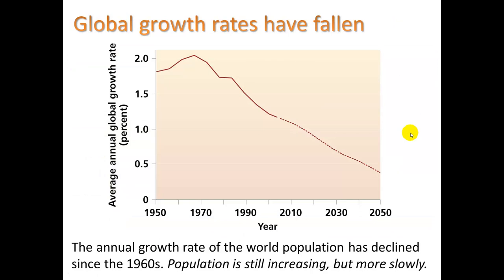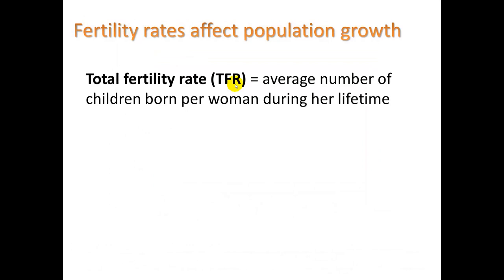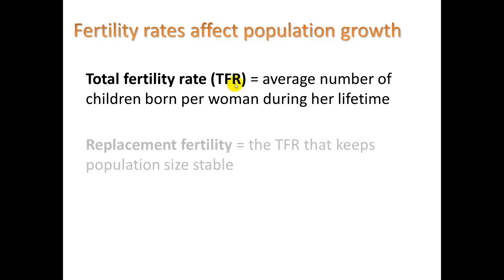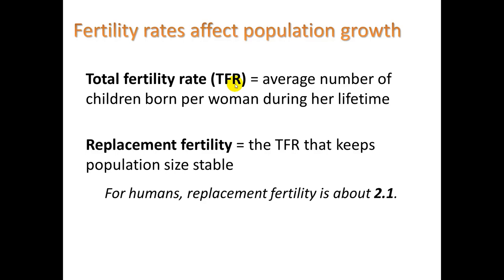A drop in total fertility rates explains lower growth rates. Total fertility rate, TFR, equals the average number of children born per woman during her lifetime. Replacement fertility is the TFR that keeps population size stable. For humans, replacement fertility is about 2.1 — we have to account for infant mortality and anyone dying before reaching reproductive age.